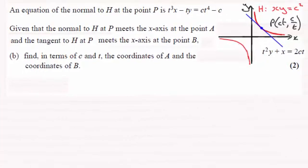Hi there. Now for this part of the question, we're told that the equation of the normal to the rectangular hyperbola H, which remember had equation xy equals c squared, at the point P is given by t cubed x minus ty equals ct to the power 4 minus c.